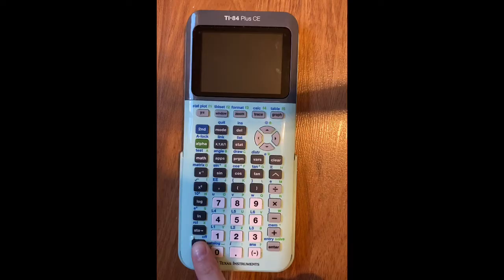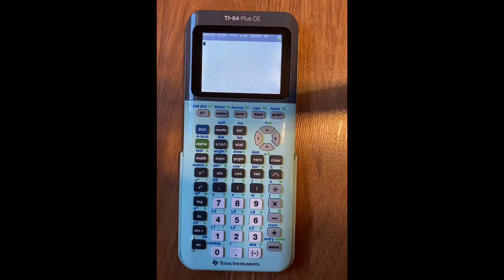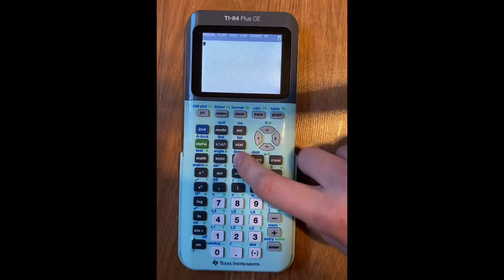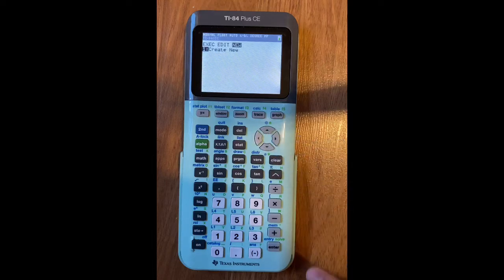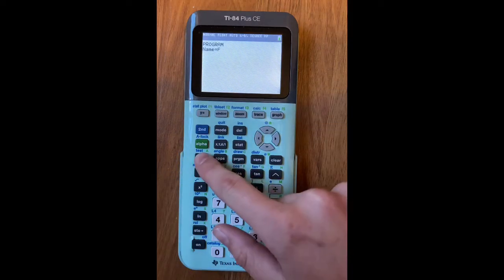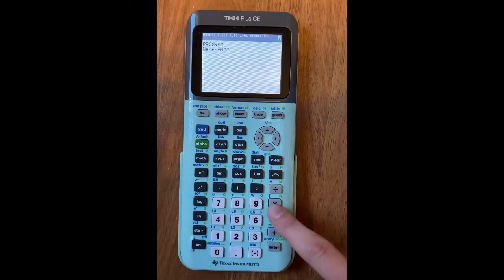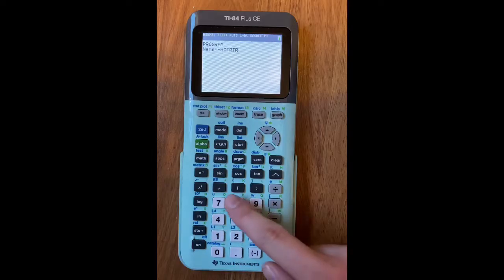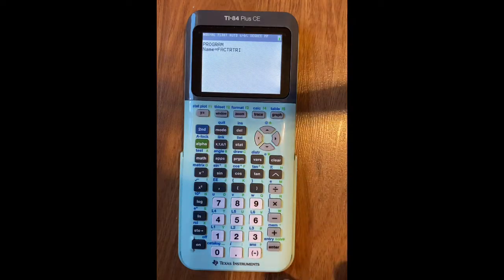First thing you're gonna do, turn your calculator on, you're going to press the program button, go over two times to new, and press enter. You can call it whatever you want. I'm going to call it F-A-C-T-R-T-R-I, as in like a factoring a trinomial.